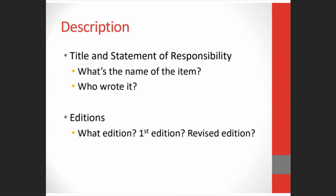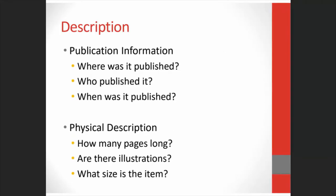We also include information about editions, and different editions do matter. If your patron is trying to find the most recent information, you want the most recent edition, so you want to record that information in your cataloging record. Another part of our description is publication information, such as where something was published, who published it, and when it was published. The publication information is important for identifying the item, and the publication date is important for knowing how recent the information is.